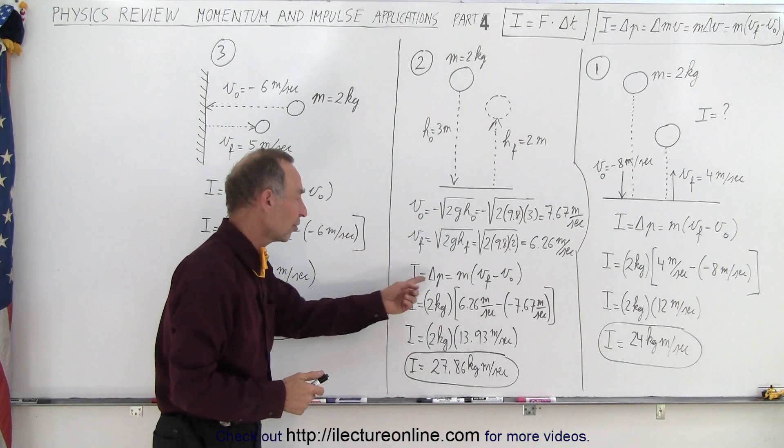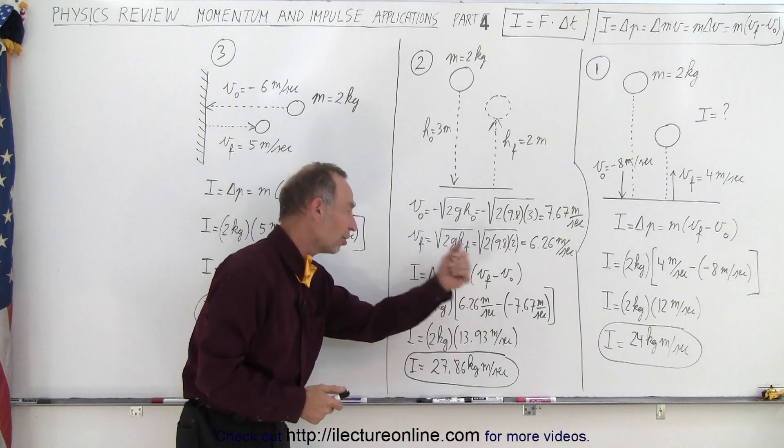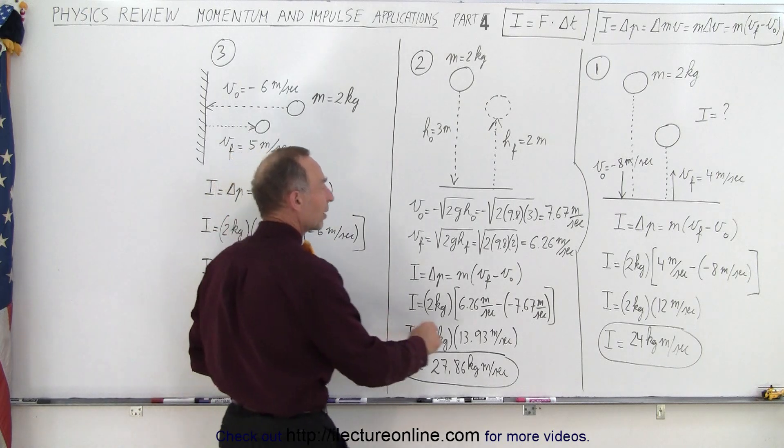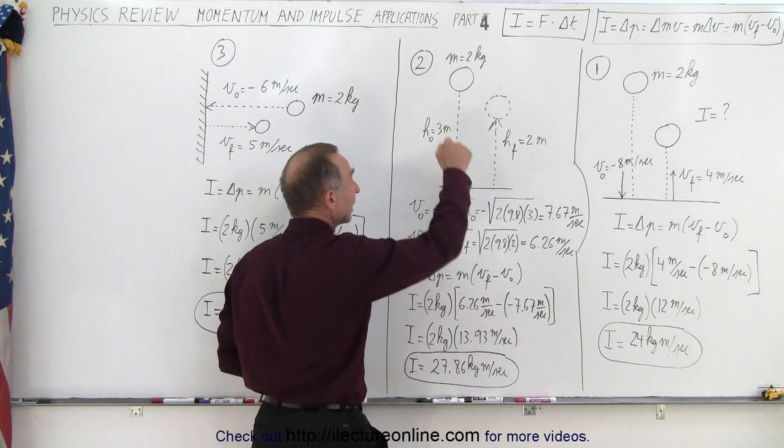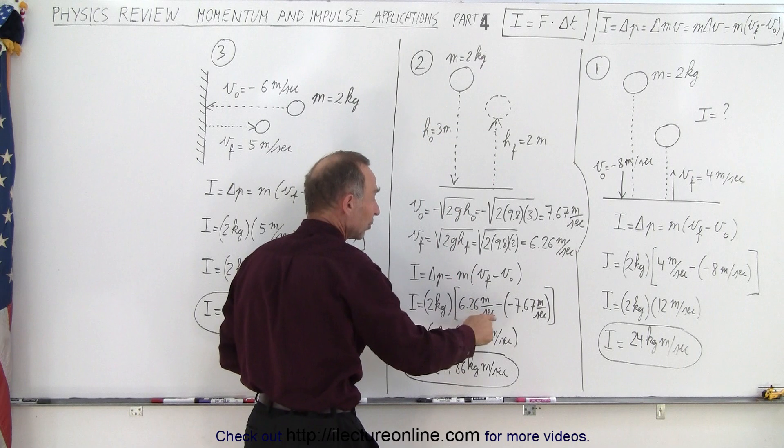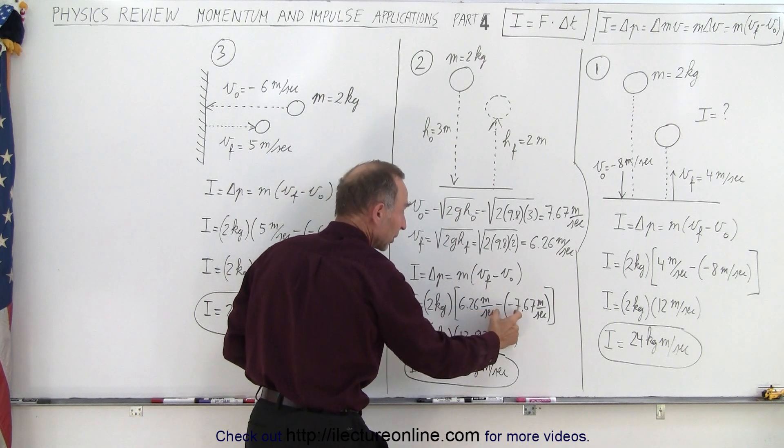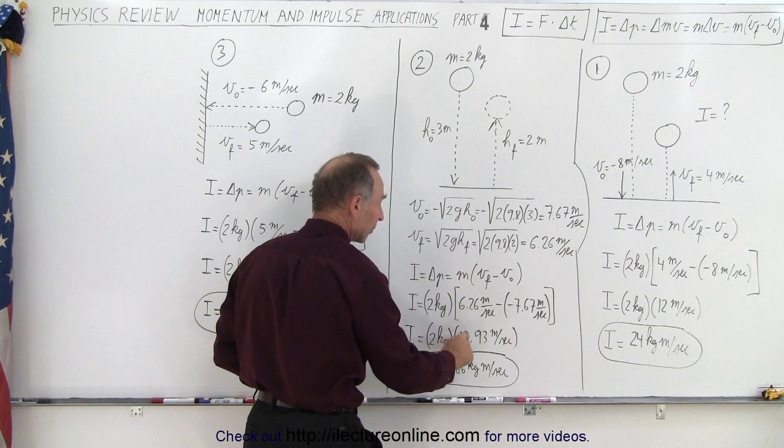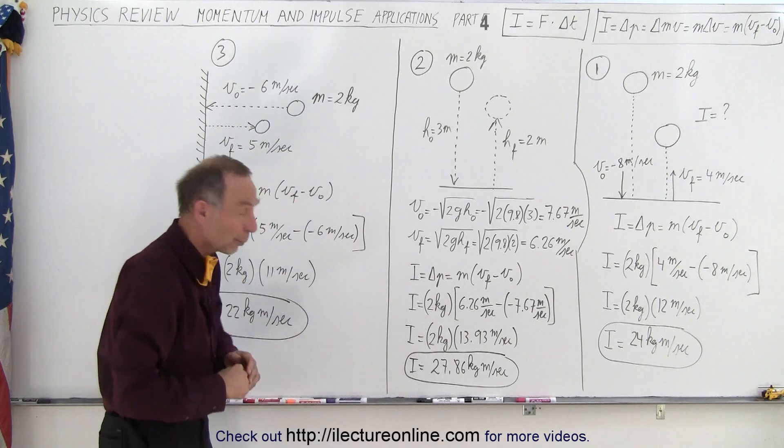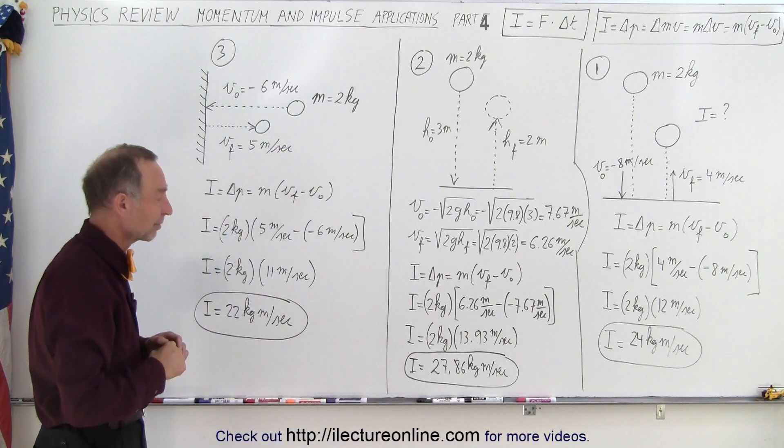So therefore the impulse is the change in momentum which is the mass times the change in velocities. Plug in the velocities. Remember again that the initial velocity is negative, so we subtract the initial velocity, which becomes positive. So we get two times 13.93 or 27.86 kilogram meters per second for the impulse.